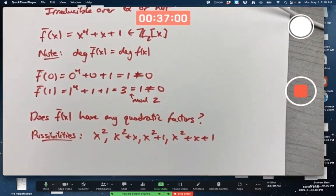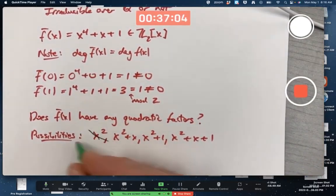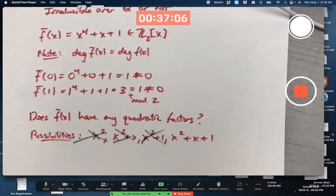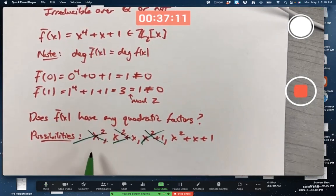But we can quickly rule out this one, this one, and this one. Why? Because they have roots in Z_2. Zero squared is zero there. Zero is the root of that one. Zero is the root of that one, as is 1. Mod 2, and 1 is the root of this one. So the only possibility left to check is x squared plus x plus 1.